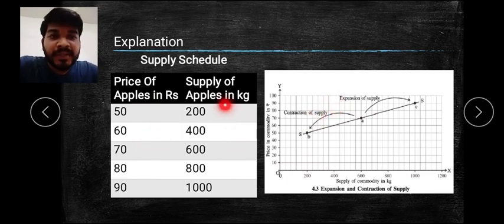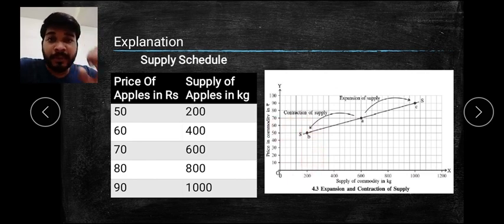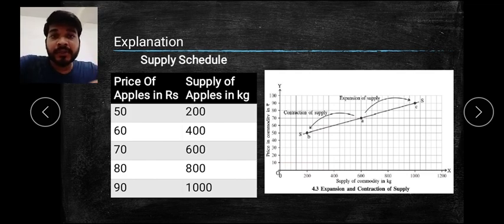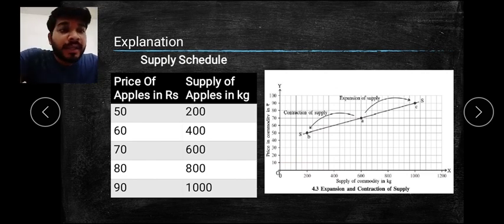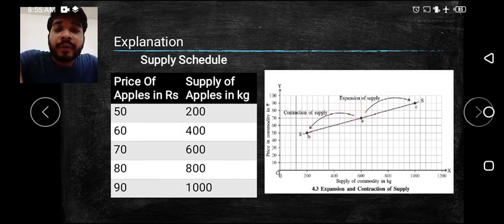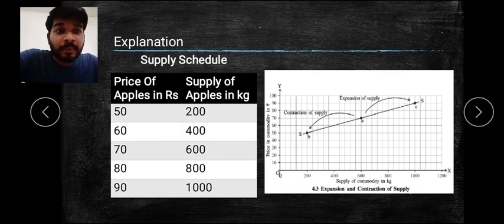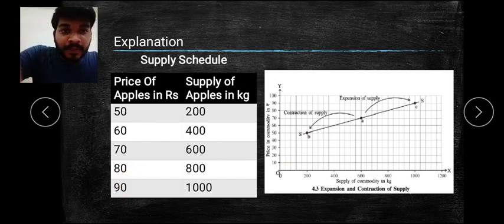When price reduces to 50, the supply falls from 600 to 200. Because the price has decreased, the supply decreases - the seller does not want to sell at lower prices, so there is a shortage of products in the market. You experience contraction of supply because from price 70 it became 50 and with the law of supply the supply also became less. At point A the price is 70 and supply is 600.